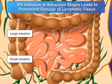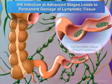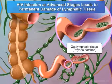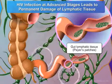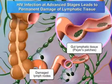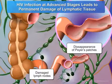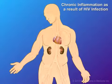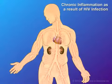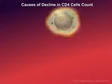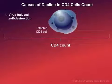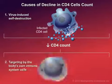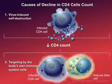HIV infection leads to fibrosis, or tissue remodeling, that causes damage to lymphatic tissue, which is unable to restore and maintain a population of CD4 cells, particularly in lymph nodes and gastrointestinal-associated lymphatic tissue, or GALT. HIV infection also triggers the immune system response, which results in chronic inflammation in the body. It is likely that the reduction of CD4 cells is caused by virus-induced self-destruction, as well as targeting by the body's own immune system cells.